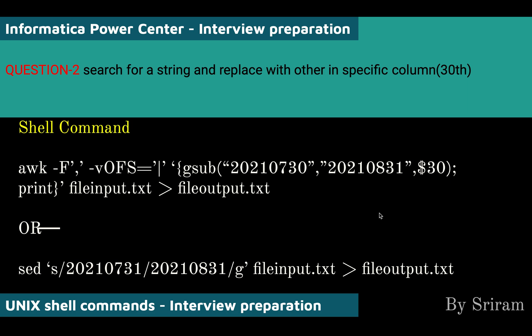Question two: how to search for a string and replace it with a different value in a specific column only. Say I have a file with 50 columns and I want to do the search-and-replace on only the 30th column. I have two commands — SED and AWK. In the AWK command, -F sets the field separator and OFS is set to pipe. The gsub function is a global substitute that searches for '0730' and replaces it with '0831' on column $30, applying this to input.txt and writing the result to output.txt.